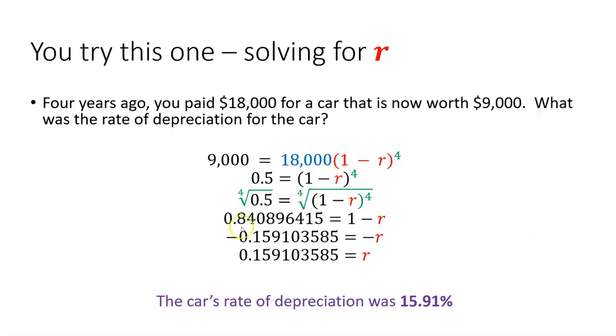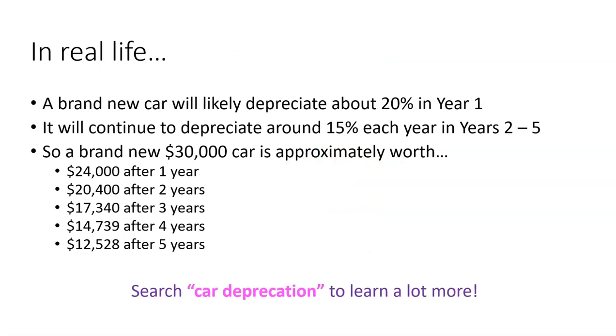Sometimes students get a little nervous when they have a negative answer on the left and this negative r on the right, but everything's going to end up positive because you divide both sides by negative one. So in this instance, a car actually lost half its value. You notice 9,000 divided by 18,000 was 0.5.